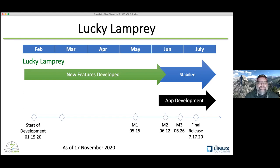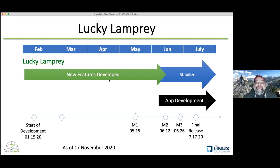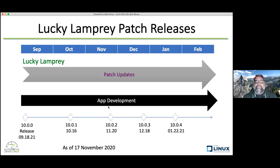The next release after Koi will be called Lucky Lamprey, and we plan on releasing that in July of next year, with the usual assortment of patch releases after that.